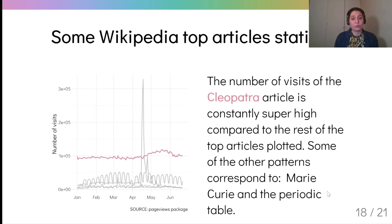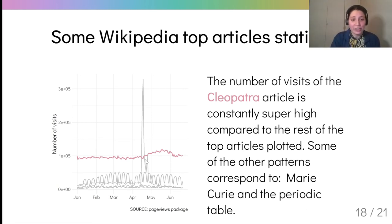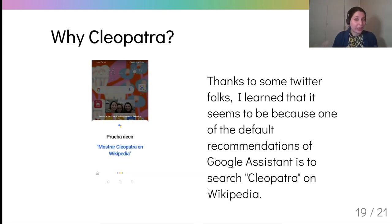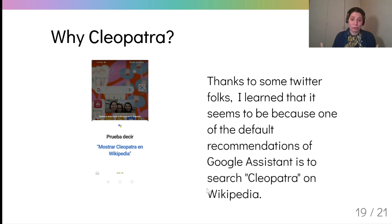Among them there was Cleopatra, but I also plotted to compare the Marie Curie article — which is this big spike — and the periodic table, which shows a periodic pattern at the bottom. I realized that Cleopatra was a quite constant line and super high compared to the rest, so it was an outlier. Thanks to some Twitter folks, I learned that it seems to be because the Google Assistant recommends you search for Cleopatra on Wikipedia, so a lot of people are doing this.